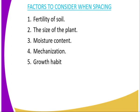The second factor is the size of the plant. For those plants which normally grow very tall and very big, they require a wider spacing. While those plants which are very small in size, they require a closer spacing. The third factor is moisture content in the soil. Soil that contains a lot of moisture requires close spacing, while soil that contains little moisture — for example, sandy soil — requires wider spacing to minimize competition for nutrients by the growing plants.